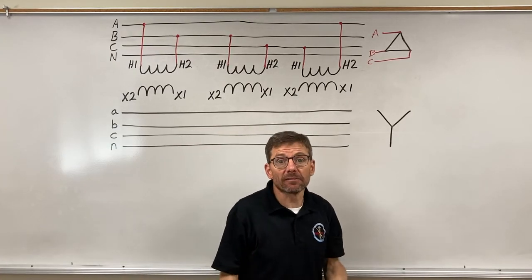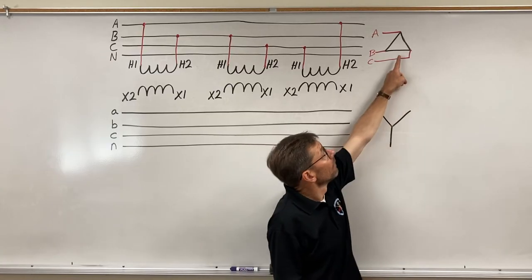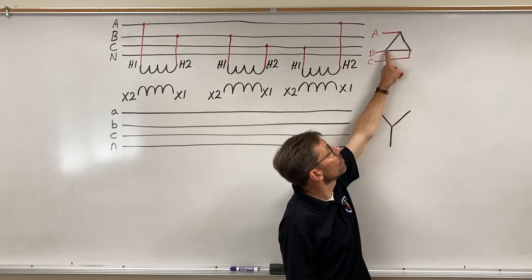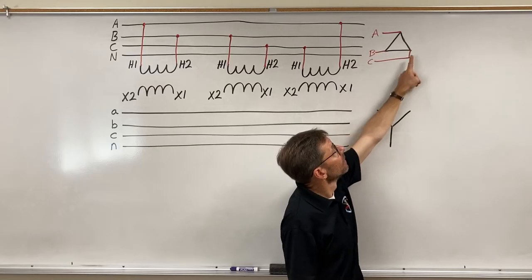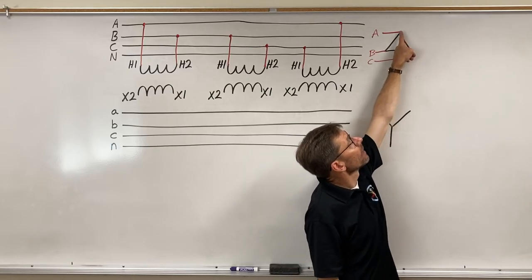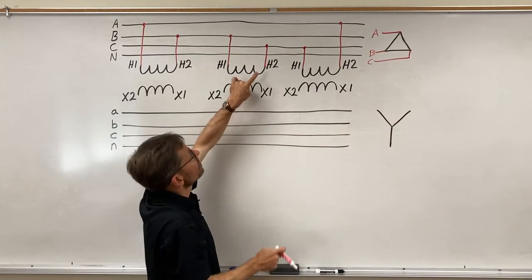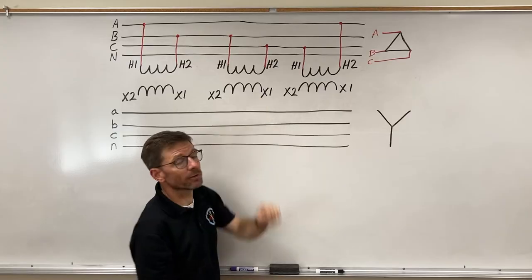And if we look at it from the perspective of the winding, each winding—one on this side connects to B and C, the one on this side connects to A and C. So each winding connects to two different lines.